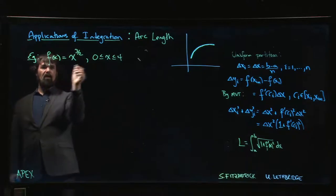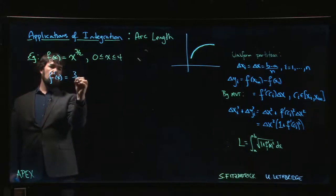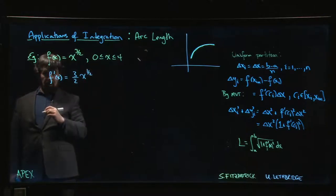Let's see how it looks here. Here's f of x. We calculate f prime. f prime of x is going to be 3 over 2 x to the 1 half. So when I do